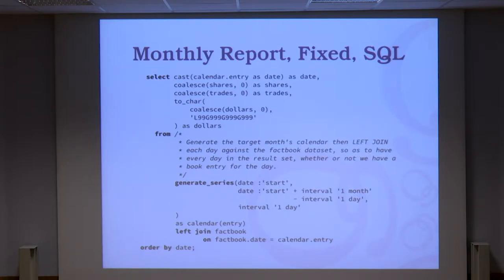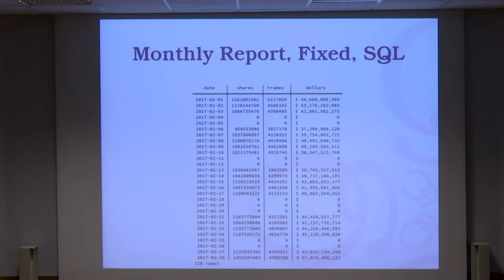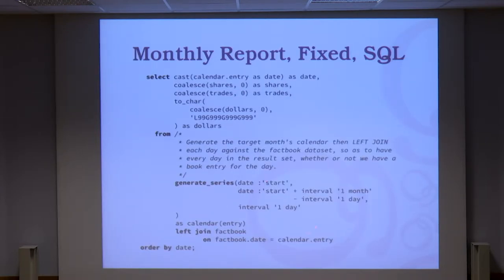Who could have written this SQL without knowing COALESCE, LEFT JOIN, and GENERATE_SERIES? That's SQL from the 80s — you could do that in the 80s already. If you don't know how to do that, you don't know SQL at all. It's not even the basics. The result looks like this with zeros instead of numbers when you don't have them, and we have 28 rows. What's nice is you don't need to know that February is only 28 days long — you just say one month and PostgreSQL figures out how many days are in that month.